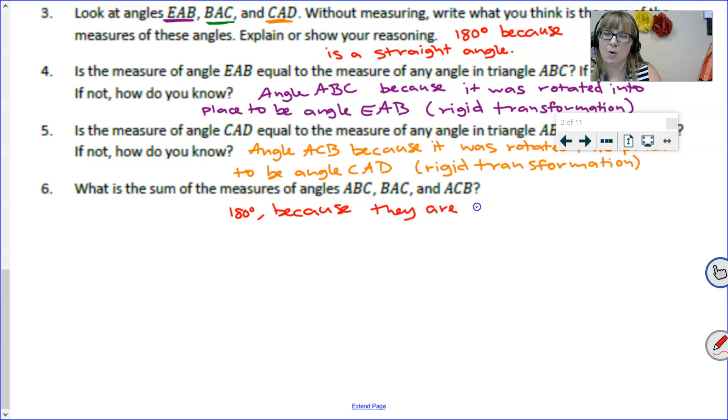They're essentially the same angles as what we already added to form the straight angle. So 180 degrees because they are congruent to the angles that added to 180 degrees, a straight angle.